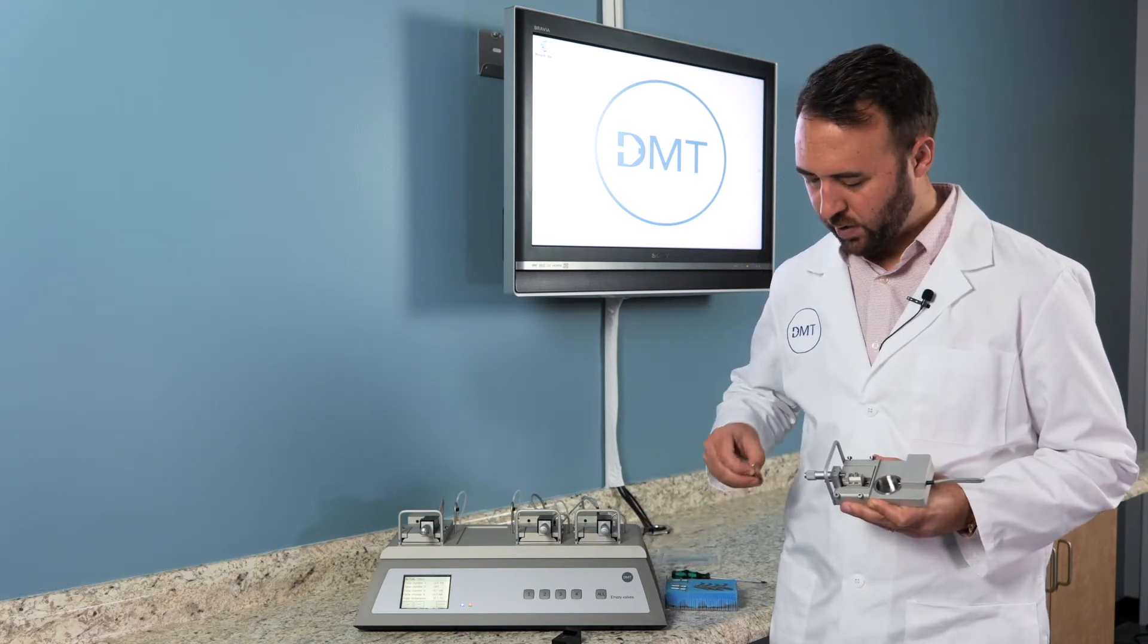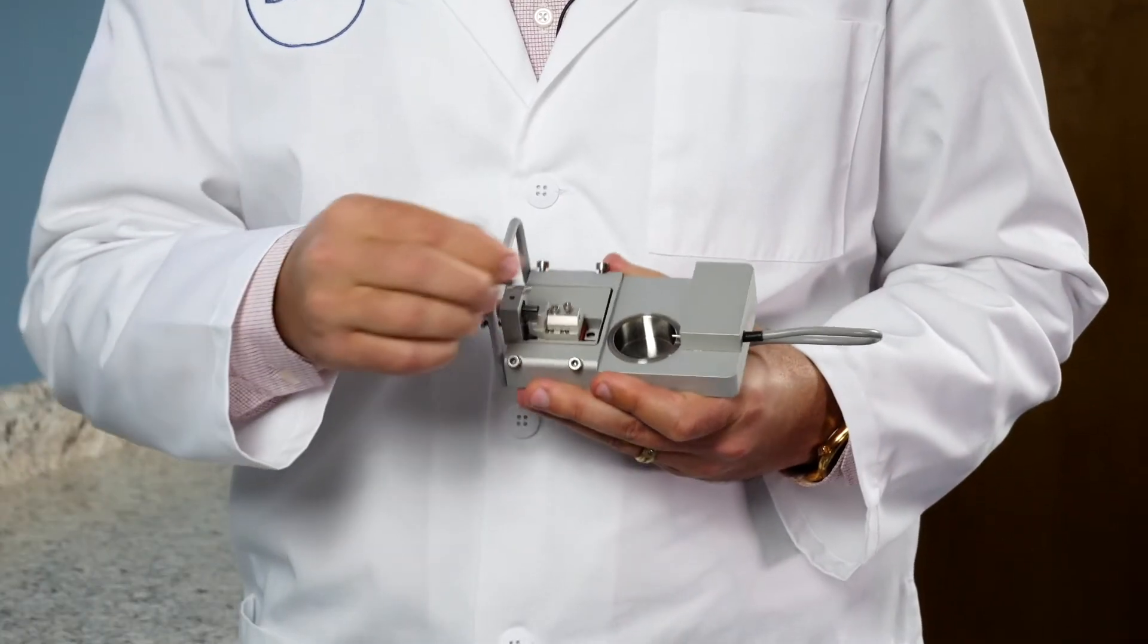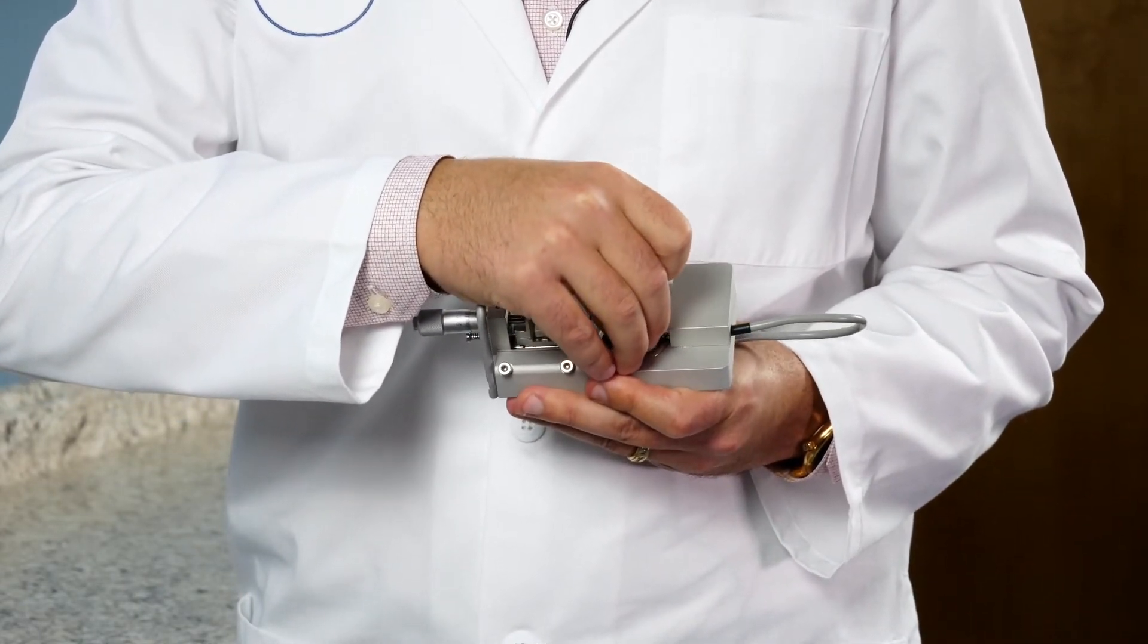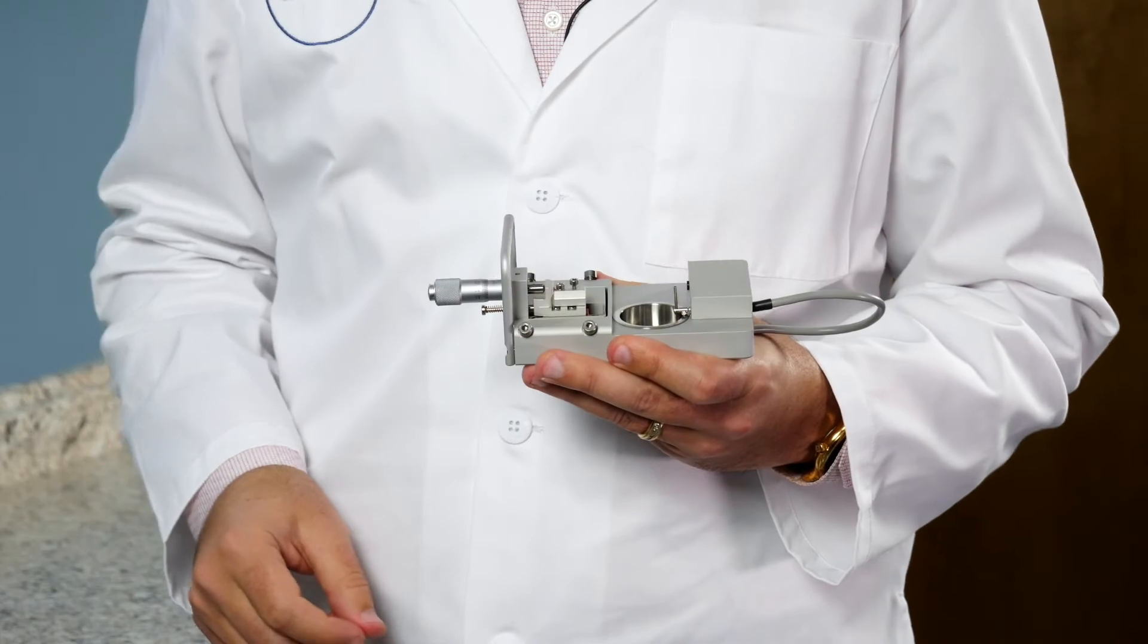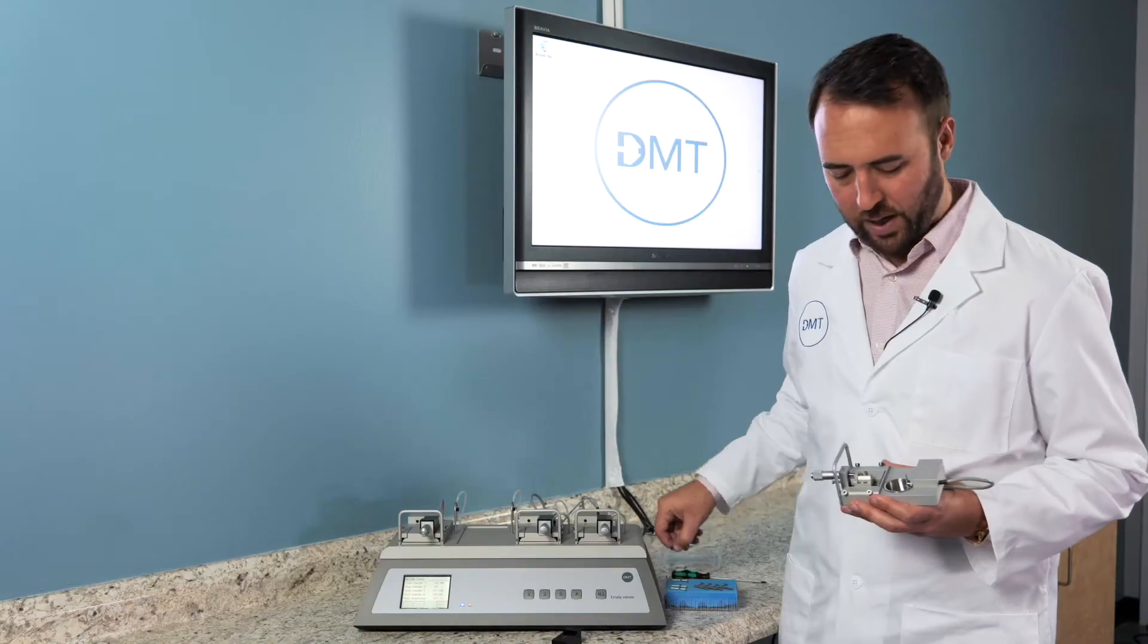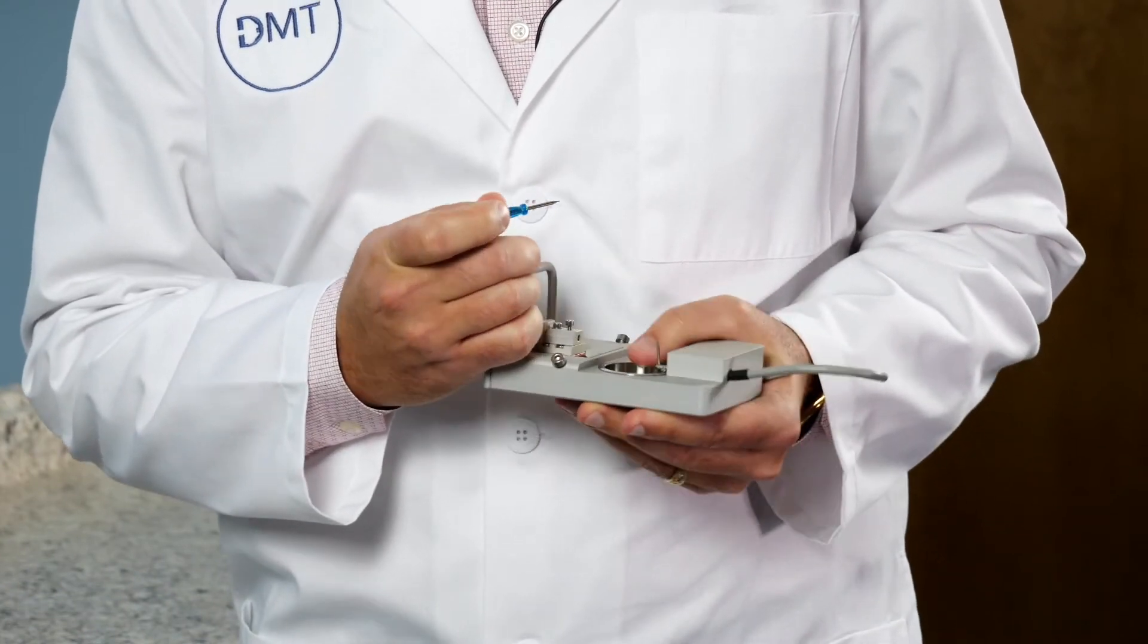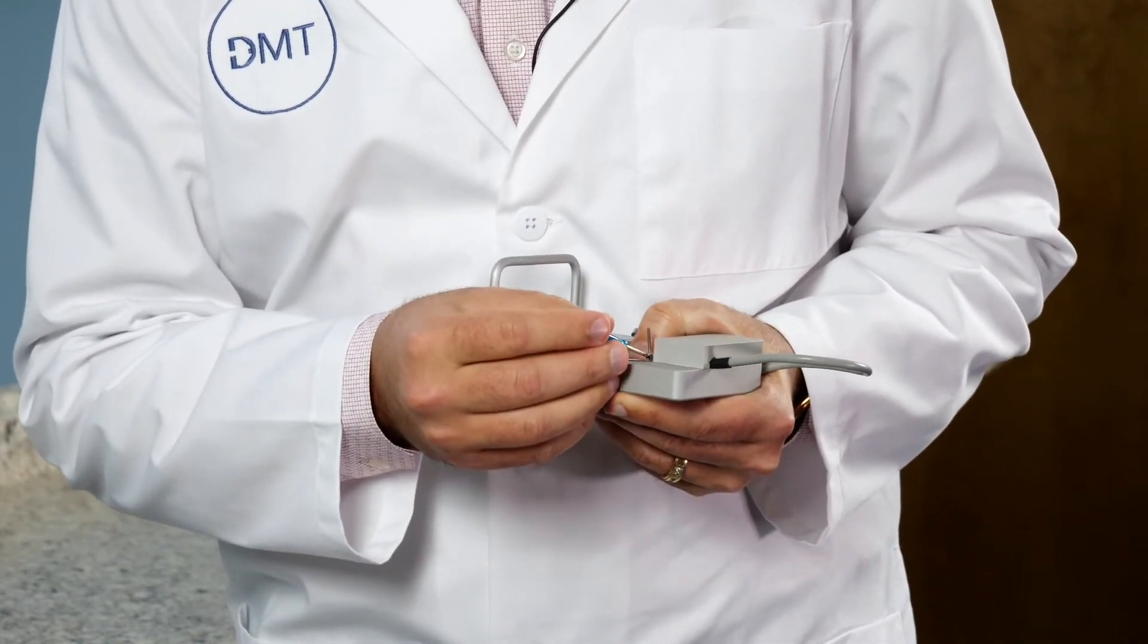So first, we will get the smaller pin, which will connect to the force transducer arm itself. So you will slide that over the arm and you will take your small screwdriver and again tighten the back screw.